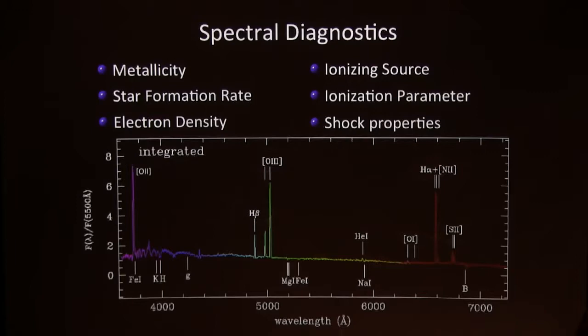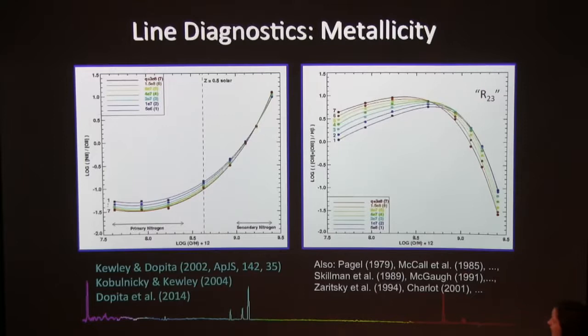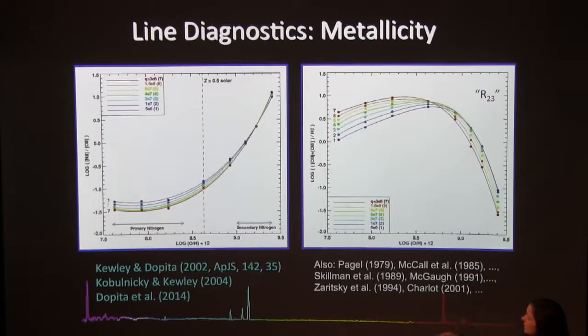To use metallicity we need to use diagnostics based on stellar population synthesis and photoionization models. We use metallicity as an input, and different line ratios are the output. Some metallicity diagnostics are much more sensitive to metallicity than others. The N2/O2 diagnostic is very sensitive because nitrogen changes from a primary nucleosynthetic element at low metallicities to a secondary nucleosynthetic element at high metallicities, becoming more sensitive to previous generations of stars.